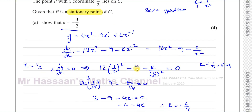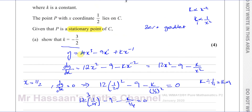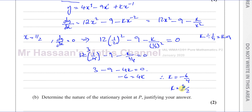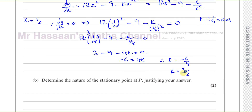So that's part A done. We knew the stationary point is when the gradient is zero, so we differentiated the function, replaced x with one half, and solved the resulting equation to get k equals minus 3 over 2. Part B says: determine the nature of the stationary point at P, justifying your answer. To find the nature of the stationary point, we need to find the second differential, which is d squared y over dx squared.